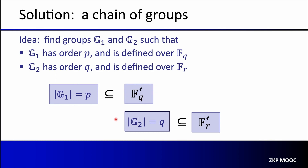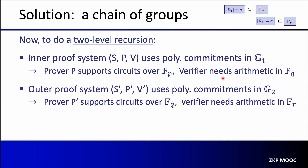The inner proof system uses polynomial commitments in G1, meaning prover P supports circuits over F_P — additions and multiplications in circuits are over F_P — but because commitments are in G1, the verifier needs arithmetic in F_Q. The outer proof system uses polynomial commitments in G2, and the prover P' supports circuits over F_Q. So the verifier circuit, which needs arithmetic in F_Q, is well supported by prover P'. It's quite cheap to implement the verifier circuit V such that the outer prover can do proofs for it.